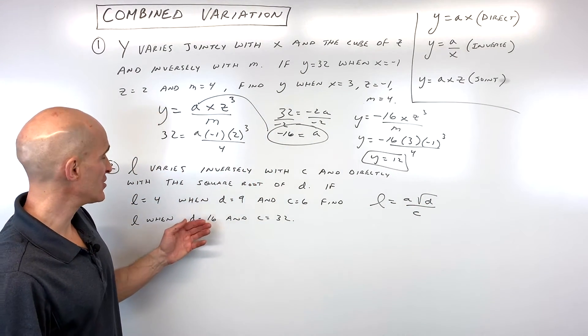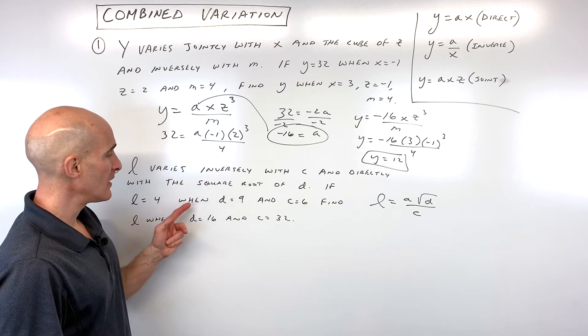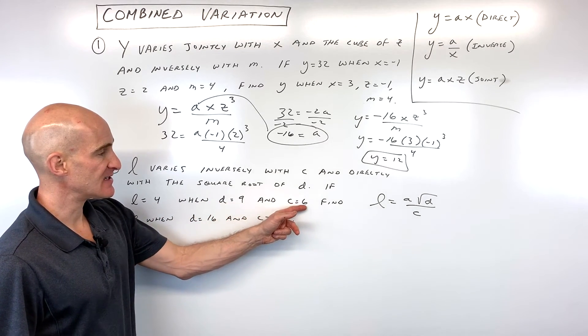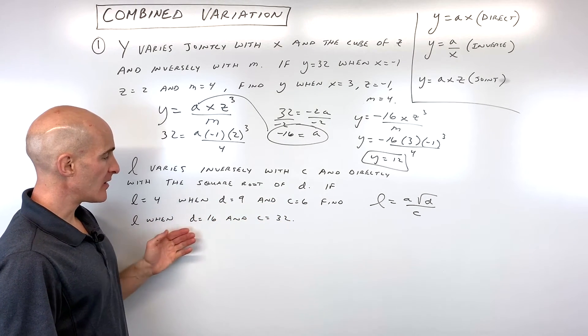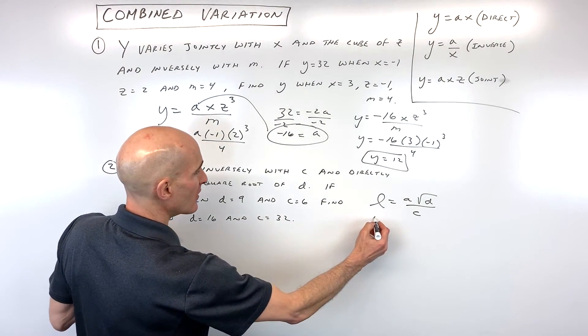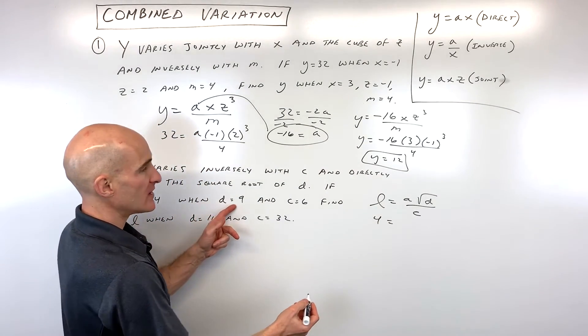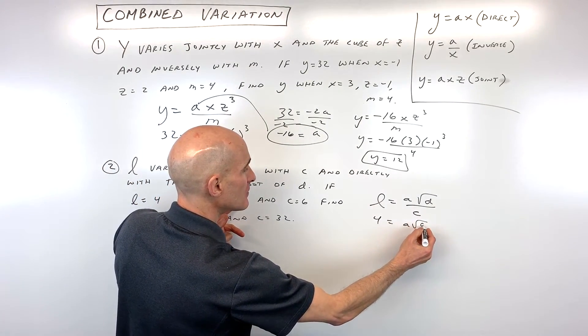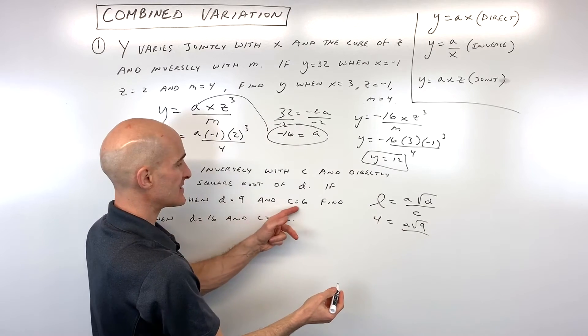Okay, good. Now they give us some information. It says, if l is four, when d is nine, and c is six, find out what l is when d is 16 and c is 32. Okay, so what we're gonna do now is we're gonna substitute. We say, if l is four, when d is nine, so putting nine in place of d, and c equals six.